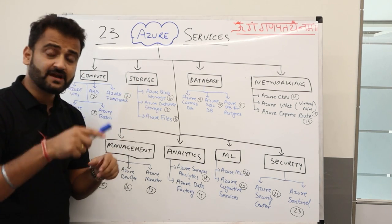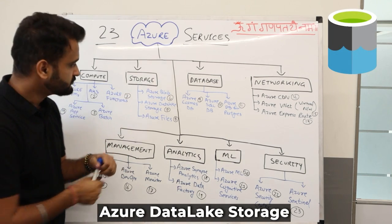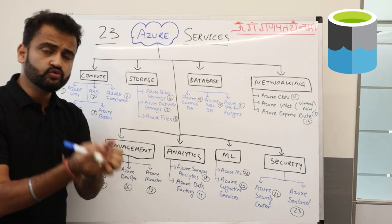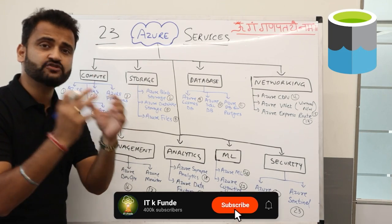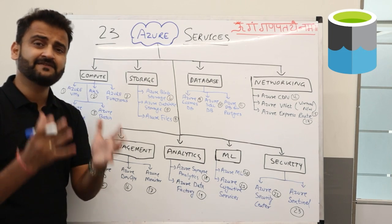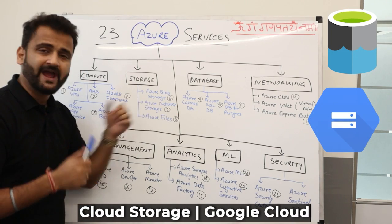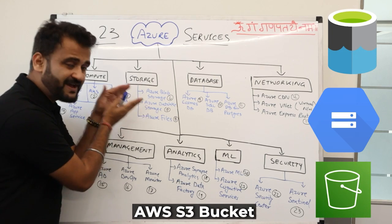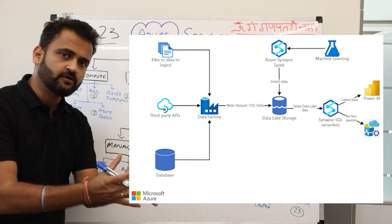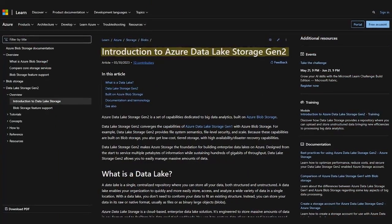They also have Azure Data Lake Storage, which is slightly more specific. Here you store data for your data analytics needs — it serves as a staging area where you load all your raw data for data lakes, data warehouses, and data analytics. On Google you use Cloud Storage, and on AWS you use S3 buckets, but Azure provides this service specifically for data lake needs. Generation two of this service is now available.